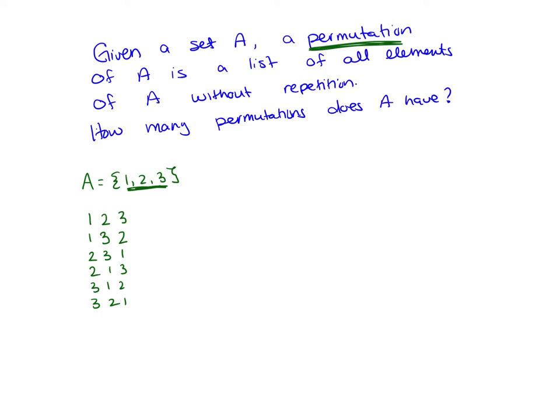So we can see that counting permutations is exactly the same as counting the lists of n elements using n items. So how many permutations should it have? It should have the cardinality of A factorial.